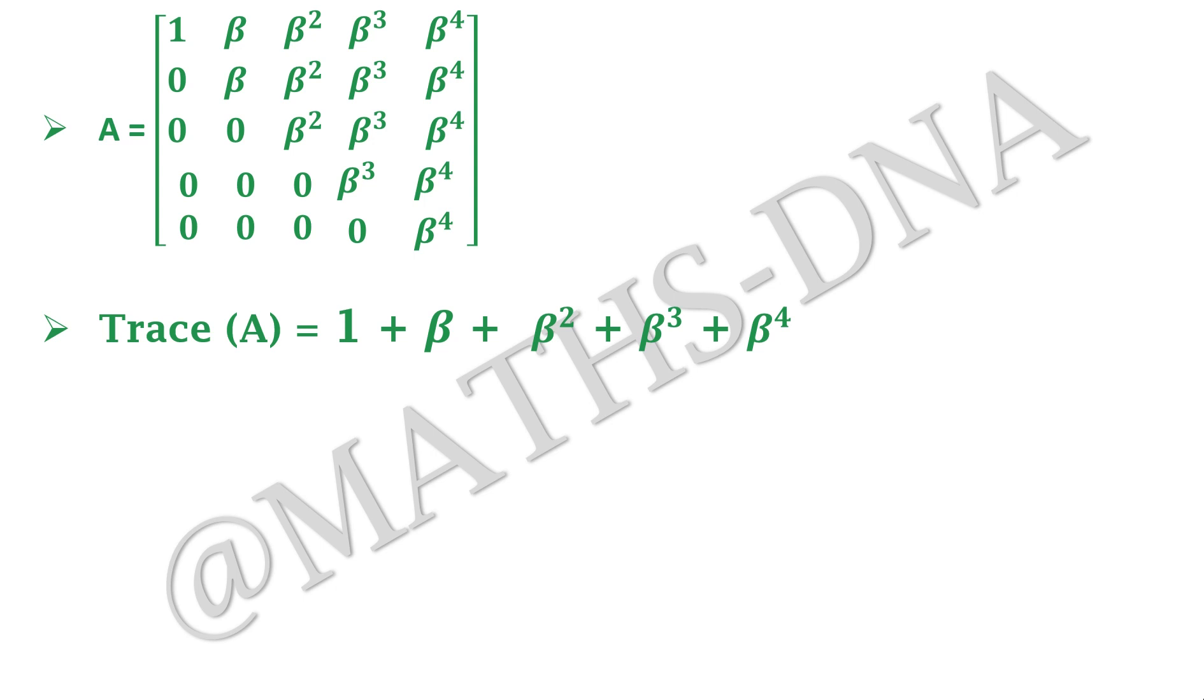And we know that trace is nothing but the sum of the diagonal entries that is equal to 1 + β + β² + β³ + β⁴. And we have already studied that this sum is 0. So we get trace of A is equal to 0.